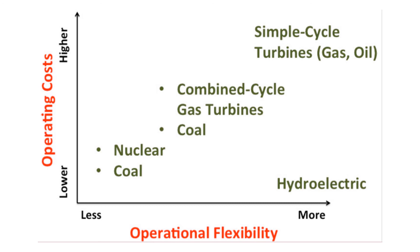This graph shows operation flexibility along the x-axis and operating cost along the y-axis for various power plants: coal-based, nuclear, coal gas, combined cycle gas turbine, simple cycle thermal (gas and oil), and hydroelectric. Hydroelectric power plants offer the most flexibility with the least operating cost. Gas turbine and oil plants are flexible but have higher operating costs. Nuclear and coal plants have less flexibility but lower operating costs. This summarizes the key points on capital cost and operating cost for power generation.